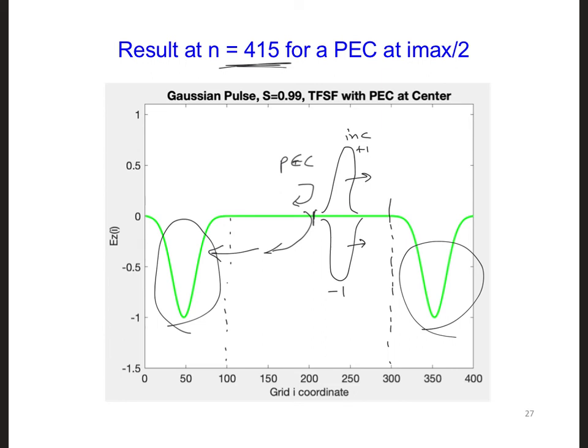this numerical scattered wave propagates right through the interface, but this incident wave is subtracted out. So that's why over here, we only see this scattered wave, non-physical scattered wave, propagate into this scattered field region.